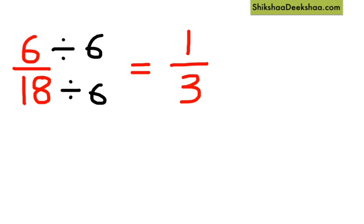Now we cannot find any number other than 1 that can divide both 1 and 3 without leaving a remainder. So 1 by 3 is the lowest term or simplified form of 6 by 18.